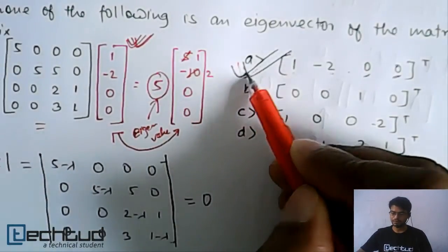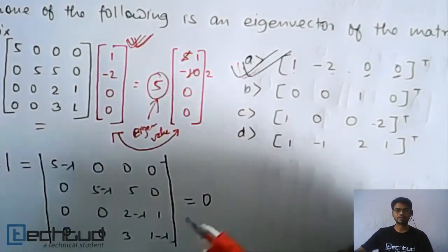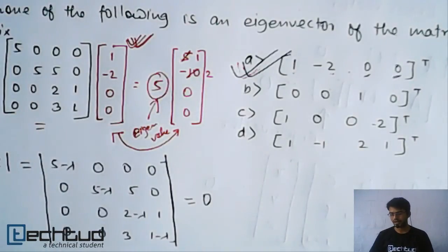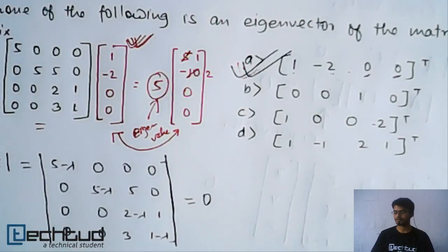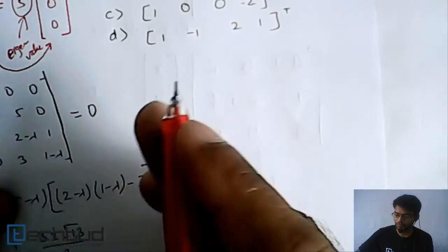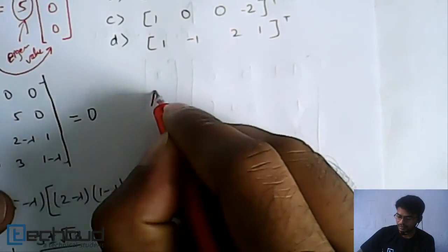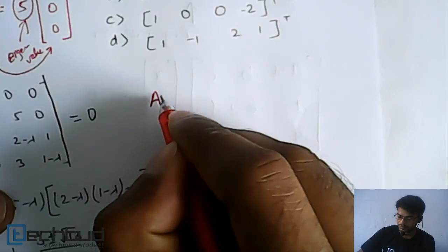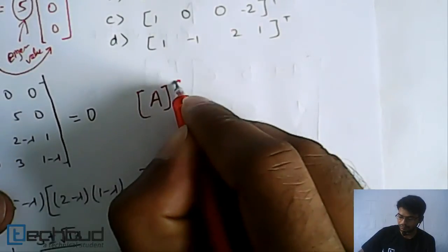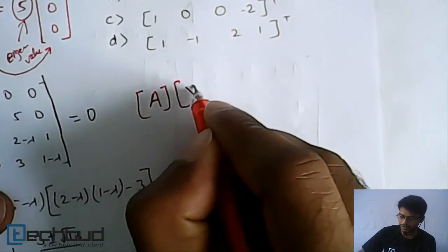Only the first option will satisfy this property, and you can directly solve this to mark the question within 30 seconds. So the correct answer is confirmed. The property for an eigenvector is: for a matrix A, if we take some vector x, then A·x will be equal to lambda times x.